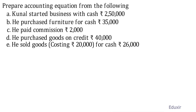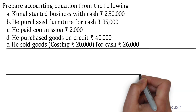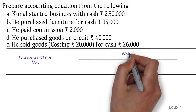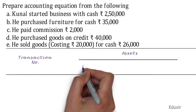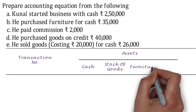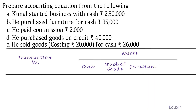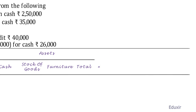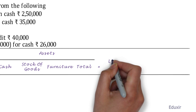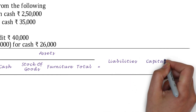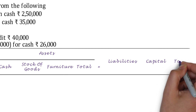To prepare the accounting equation, let us first prepare the table. We will have a column for transactions. On the assets side, we have cash, stock of goods, and furniture, along with a column for the total of all assets. On the other side, we have liabilities, capital, and a column for their total.